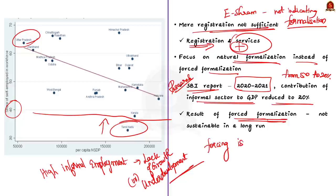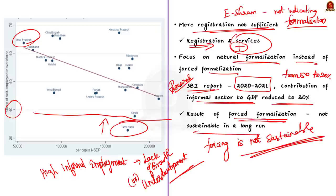The government must focus on policy changes that will help small and informal firms grow over time into medium or large formal sector firms. This will be more sustainable, according to the authors of this editorial. These are the reasons for the continued existence of the huge informal sector in the Indian economy despite government measures.